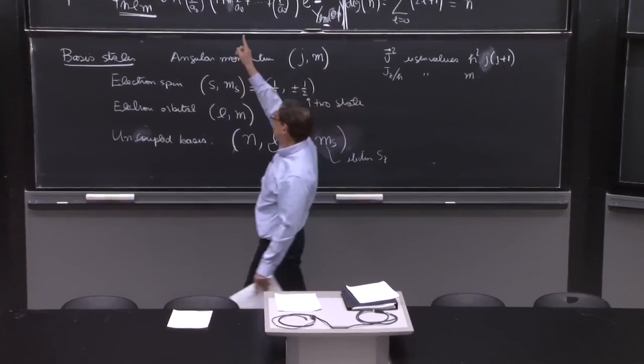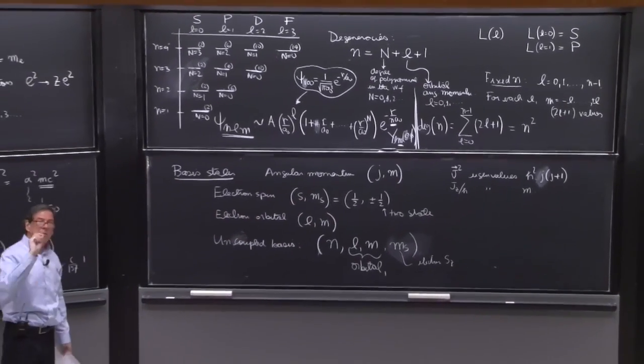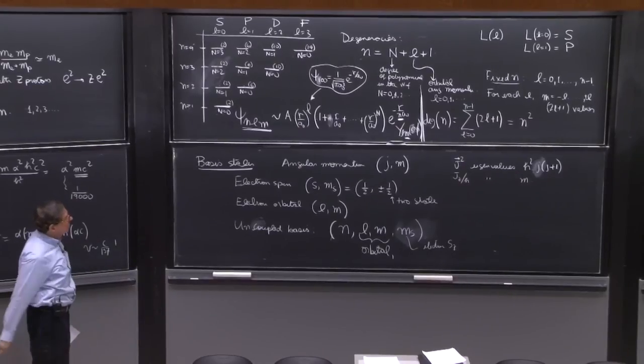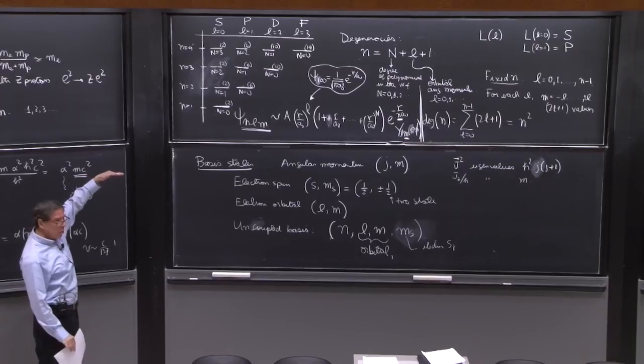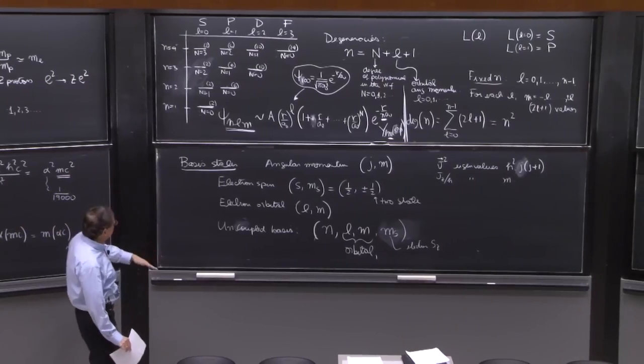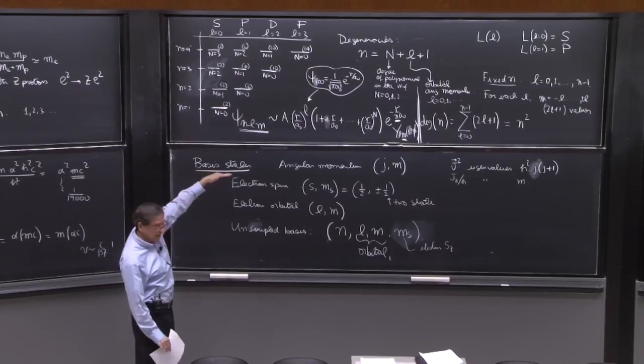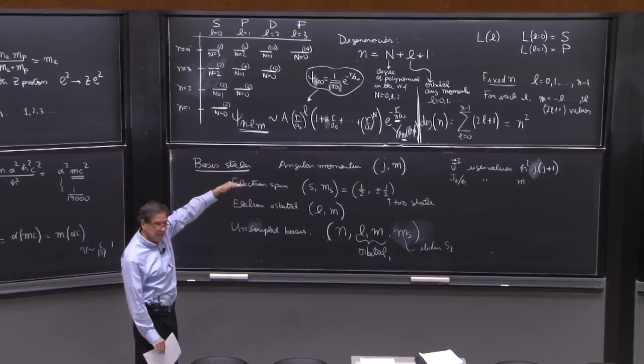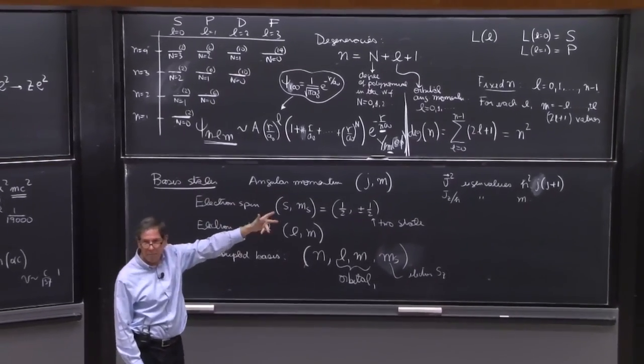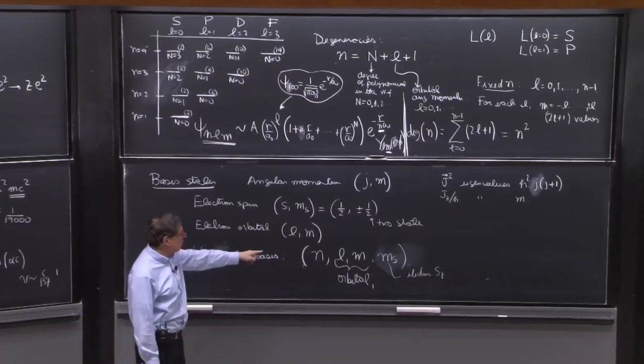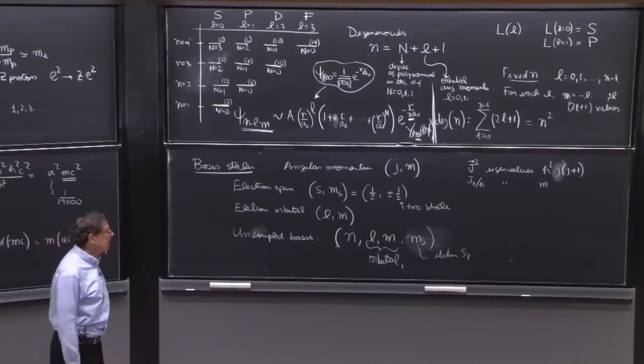For any electron in that table, you need to know uniquely that electron state. You need to give me all these numbers. You have to tell me where I am horizontally. After that, where I am vertically, I'm sorry, for n. Where I am horizontally for l. Within the l-multiplet, which is my value of m. And once you've done that, you should tell me up or down. So all those numbers are important. They're one to one corresponding to the basis states.